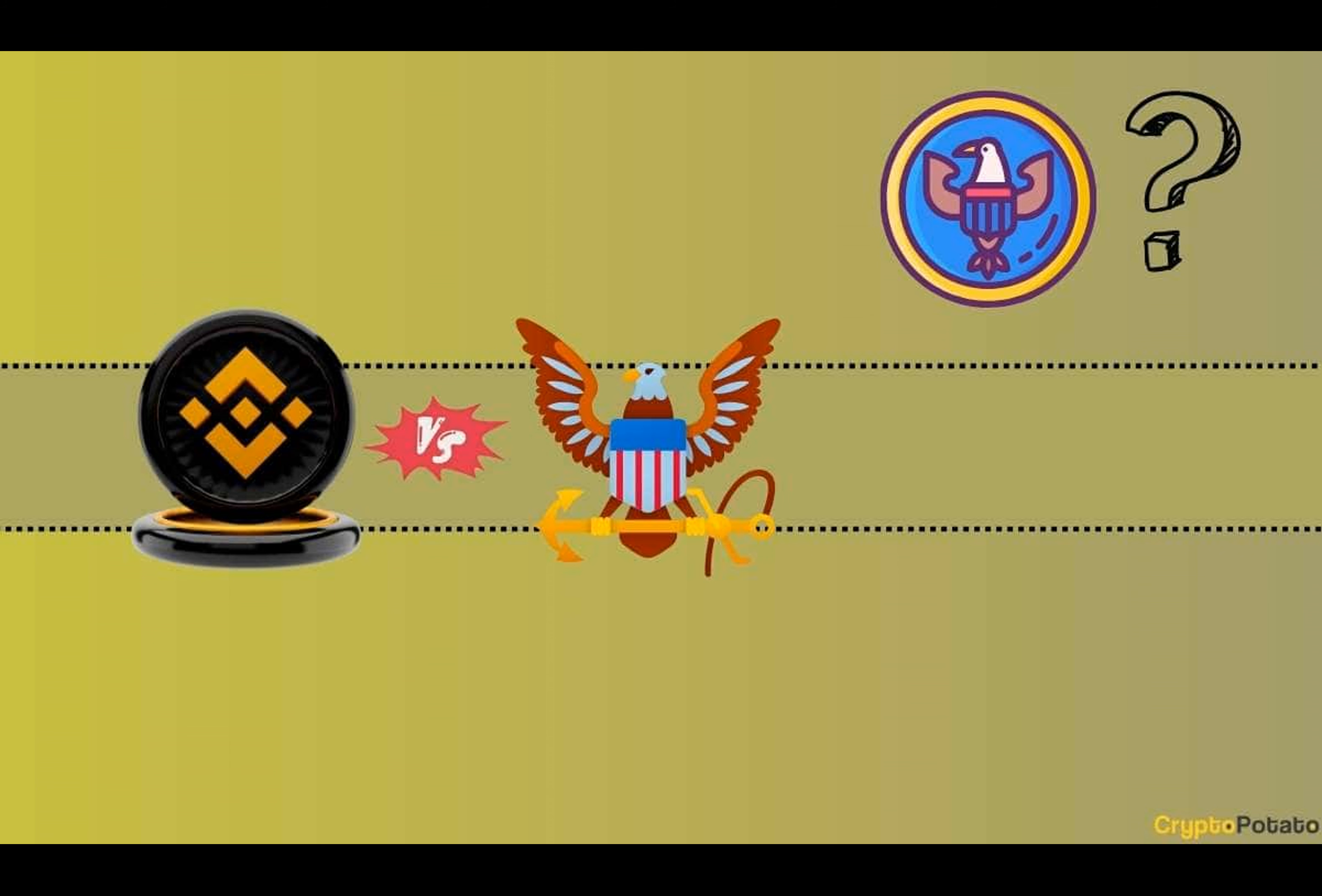Ripple's Chief Legal Officer is among the individuals who believe that the regulatory action against Binance could be a step forward for the cryptocurrency industry. The Binance resolution of anti-money laundering violations is a necessary step to bring the crypto industry into compliance with these important laws and safeguards. Big banks all went through some version of this years ago, he argued.